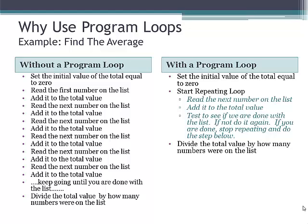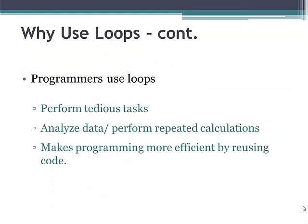So for taking the average of a list of 100 numbers, you would need six lines of code with a program loop, which is much more efficient than without the program loop. So programmers use loops when they have tedious tasks to perform, when they want to analyze data or perform repeated calculations in the coding process, and overall to make programming more efficient by reusing code.